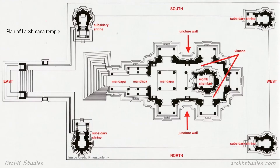This is the plan of the Lakshman temple. In an examination you can be given the elevation as in the previous slide or the plan, and you can be asked to name different parts — for example, they will label a part as A or B and ask you to identify it. Questions can be of different types, so you should be fluent with all of these terms and terminologies.